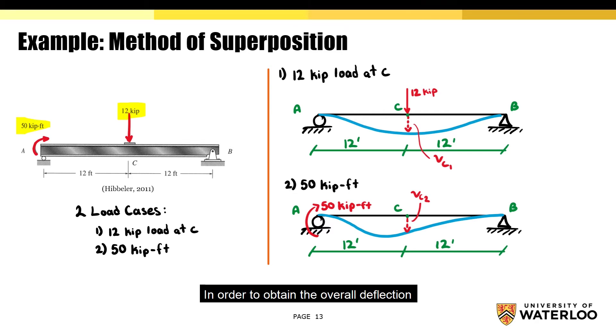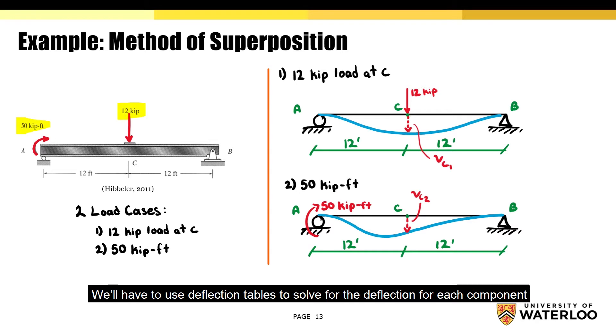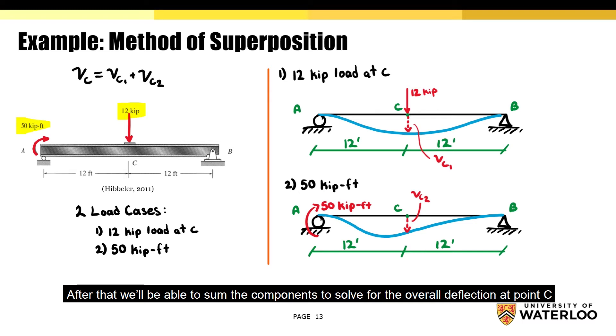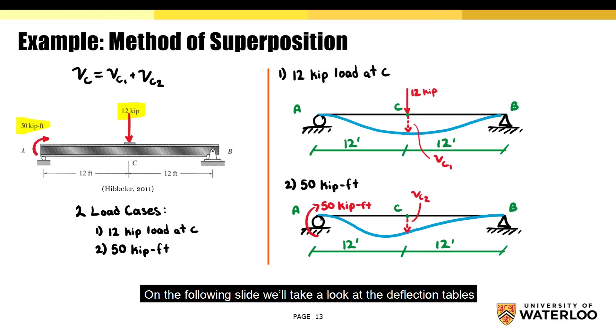In order to obtain the overall deflection, we'll have to use deflection tables to solve for the deflection for each component. After that, we'll be able to sum the components to solve for the overall deflection at point C. On the following slide, we'll take a look at the deflection tables.